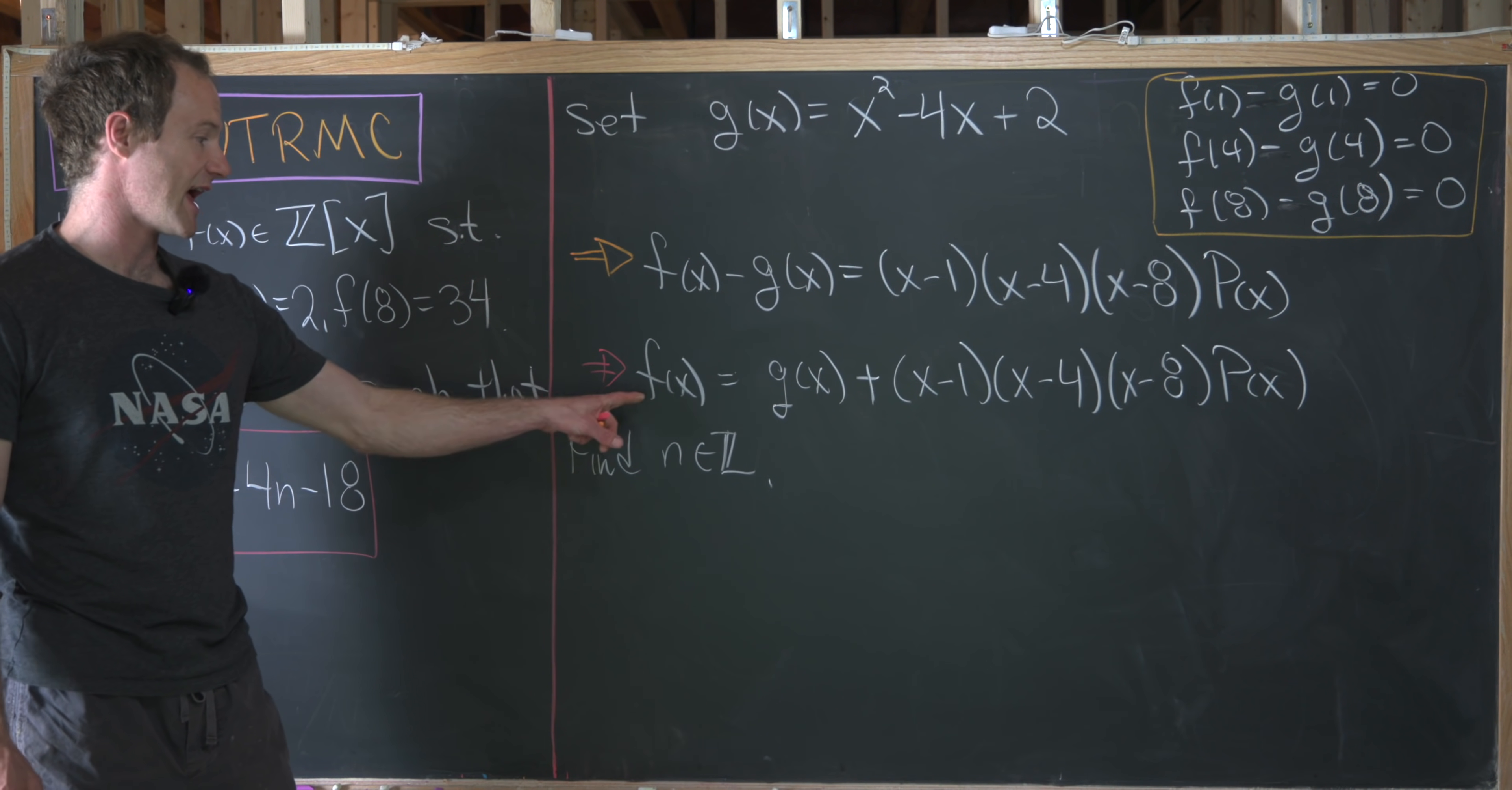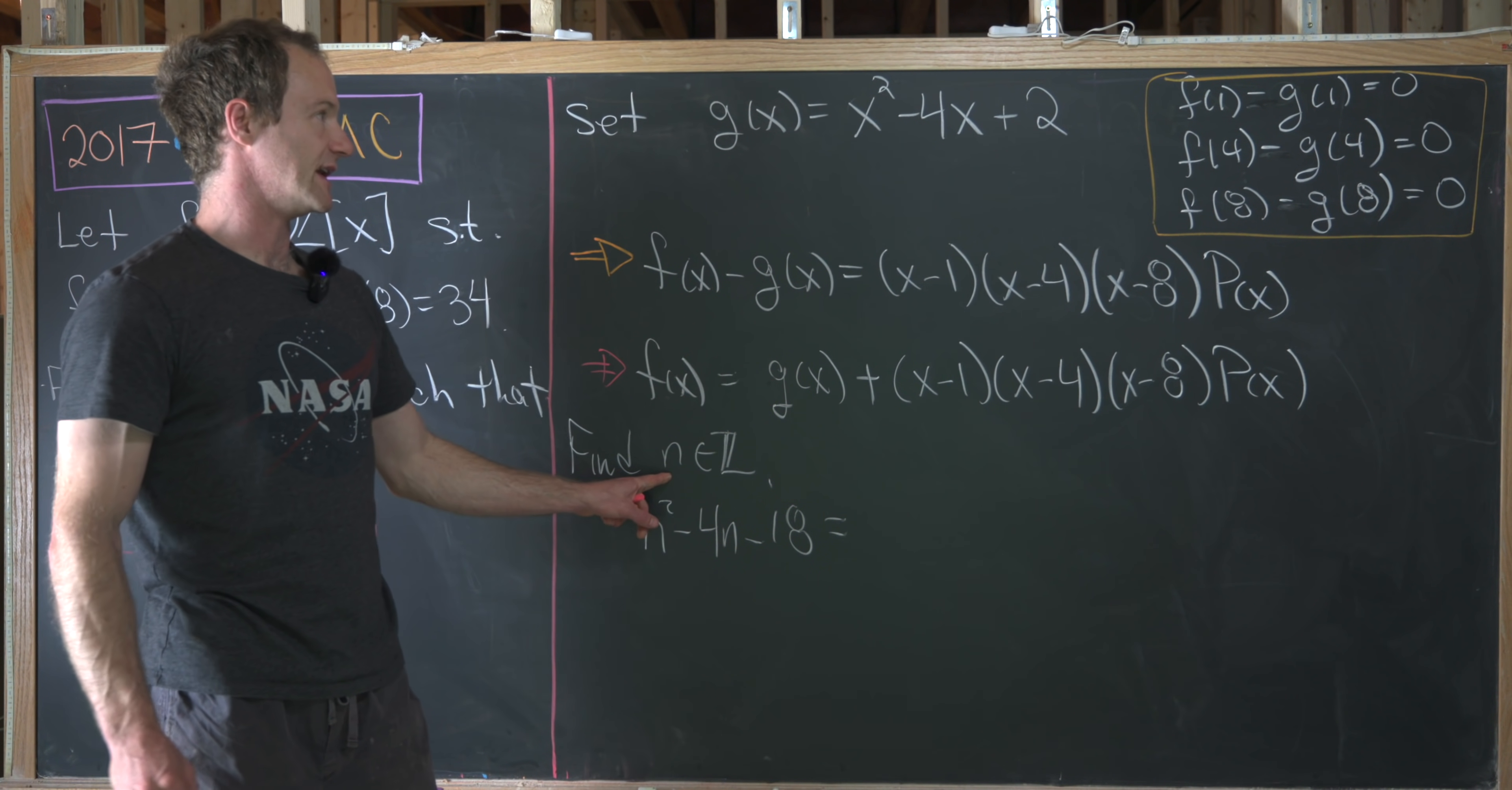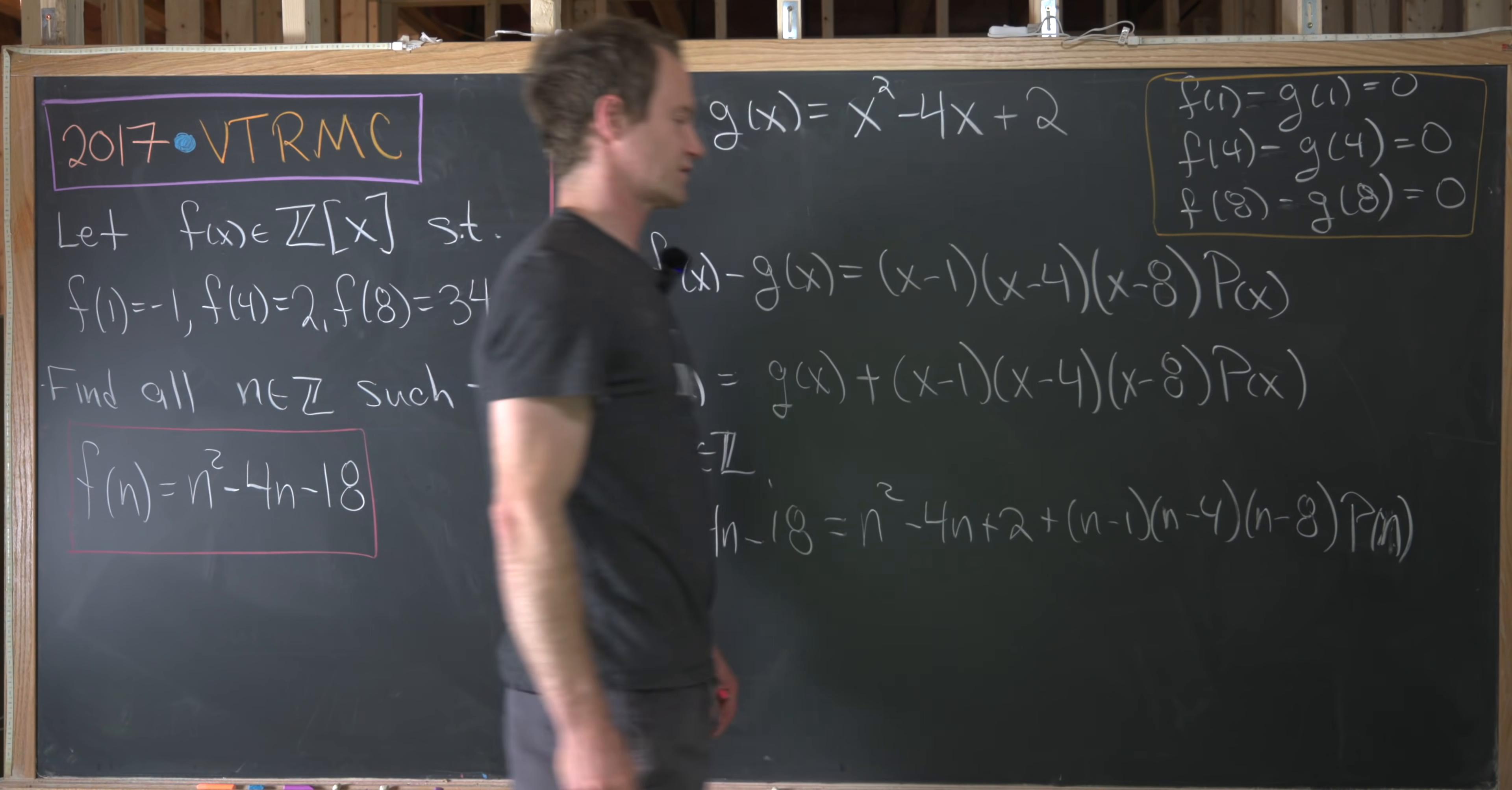And then what we want to do is find n, which is an integer satisfying this condition down here. But that means that we can replace f with this quadratic polynomial, and that's actually going to be pretty helpful. So if we replace f of n with this quadratic polynomial, we'll have n squared minus 4n minus 18 equals g evaluated at n, but we know the shape of g of x. That's going to be n squared minus 4n plus 2. And then plus, we have (n minus 1)(n minus 4)(n minus 8) times this polynomial p of x. But we've evaluated that at n, so that's just some sort of number.